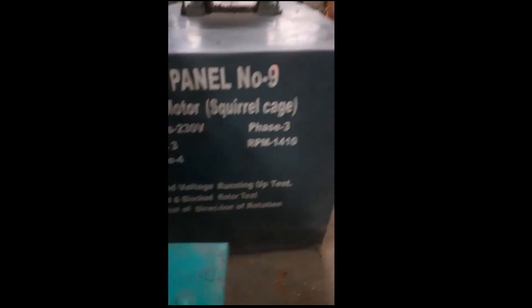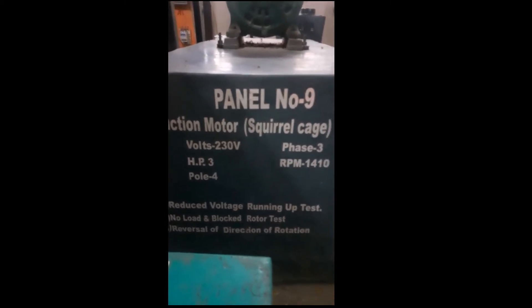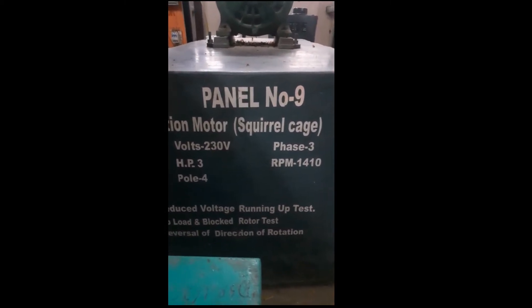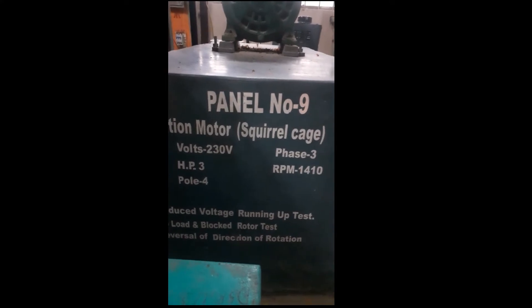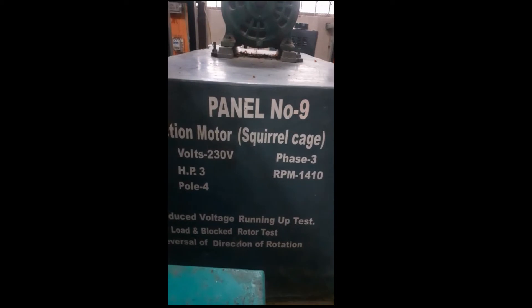In our lab at panel number 9, we have squirrel cage induction motor with specifications: voltage 230 volts, 3-phase, horsepower 3, RPM 1410, and it is a 4-pole motor.